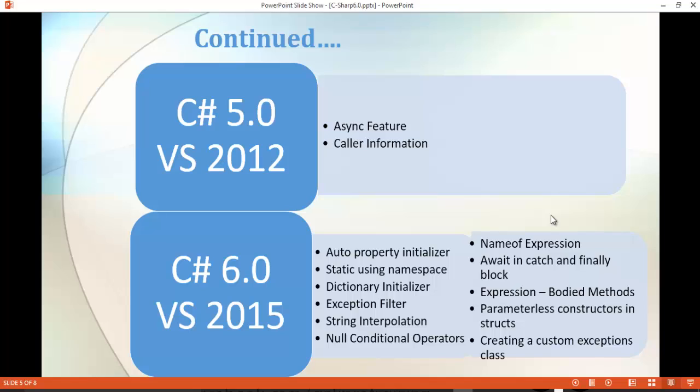Here you can observe C-Sharp version 5 with Visual Studio 2012. Here also you can see the features reduced to 2. Only async feature and caller information were the features.